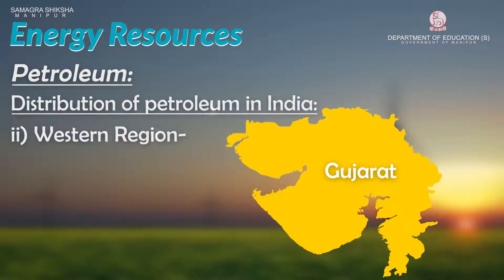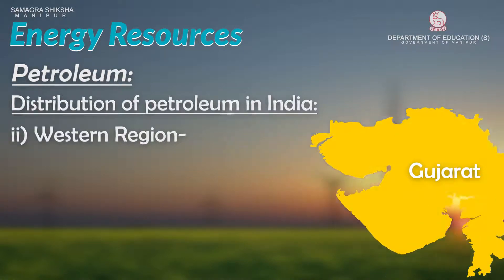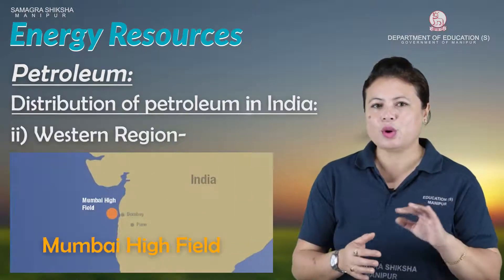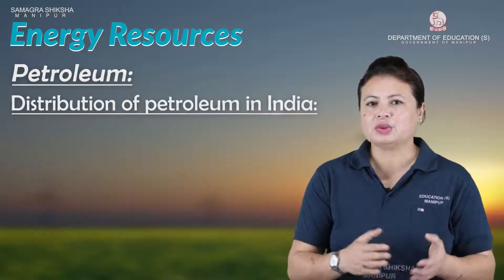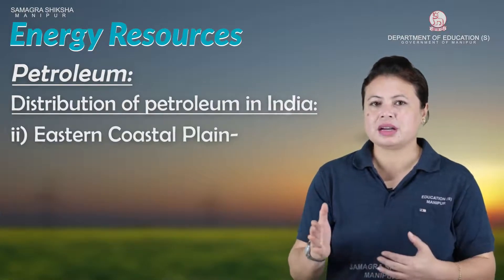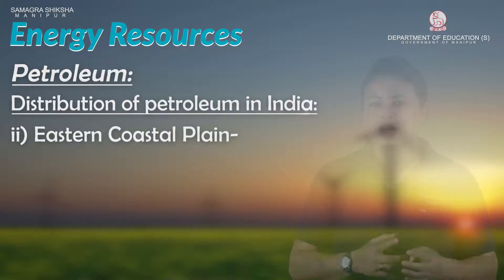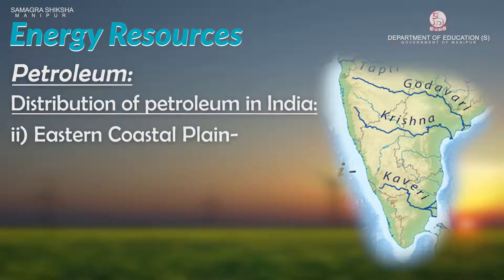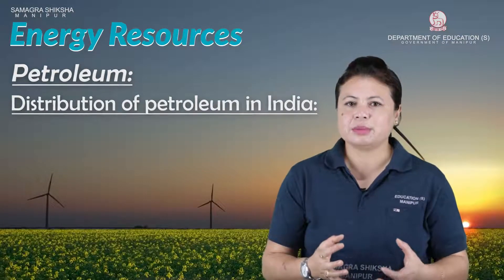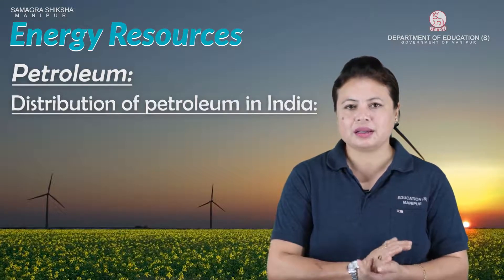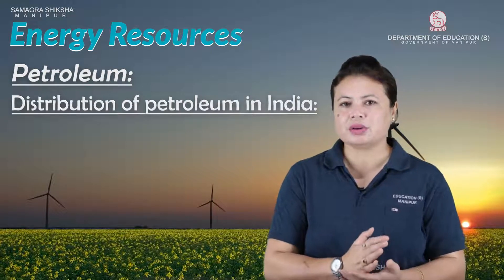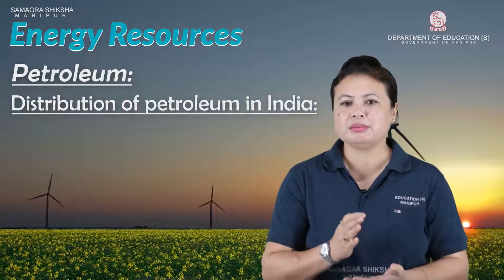In India, Mumbai High is also a major oil-producing region with a huge amount of petroleum production. In the eastern coastal plains, there is also significant petroleum production. The total production of petroleum in India is 37.7 million tons.